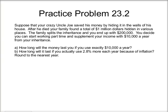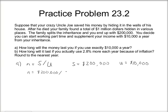For part A, how long will the money last if you use exactly $10,000 a year? This is a non-renewable resource and a static reserve problem. The amount of time it's going to last, N, is equal to the supply S divided by the annual rate of use U. So S, your total supply, is $200,000, and U is your rate of use at $10,000 a year. So N equals $200,000 divided by $10,000, which is 20 years.